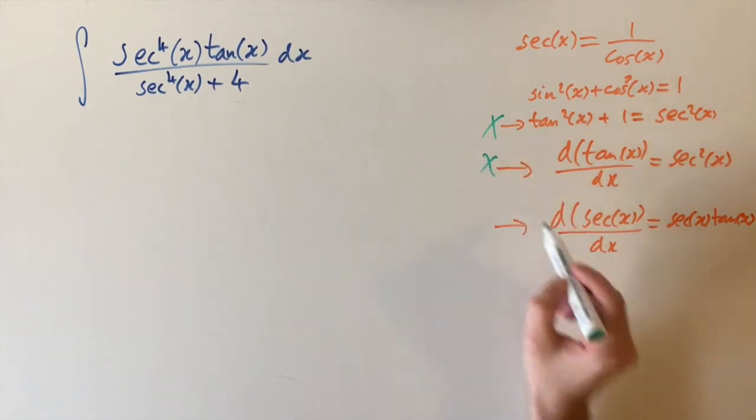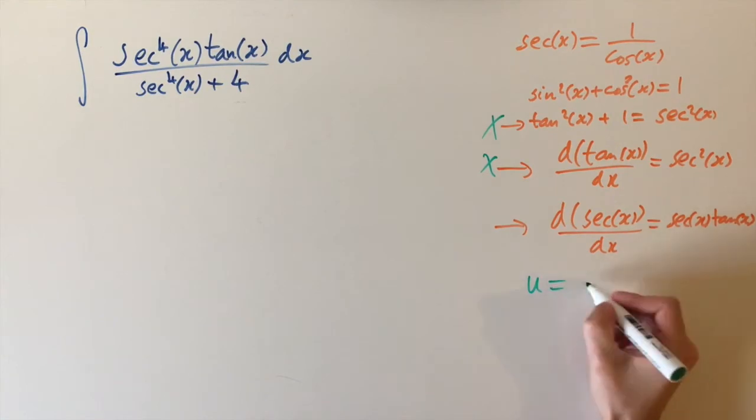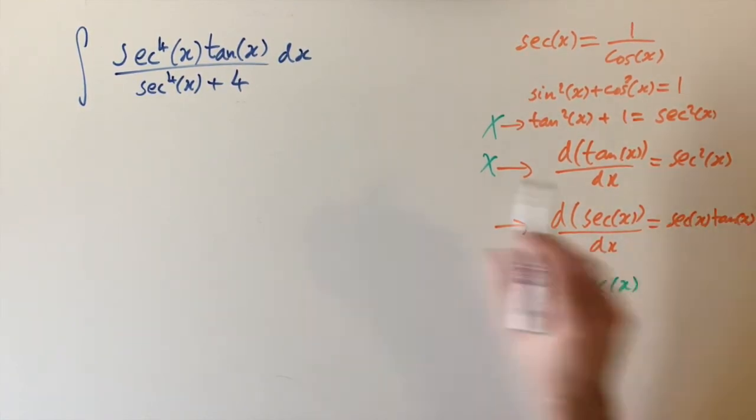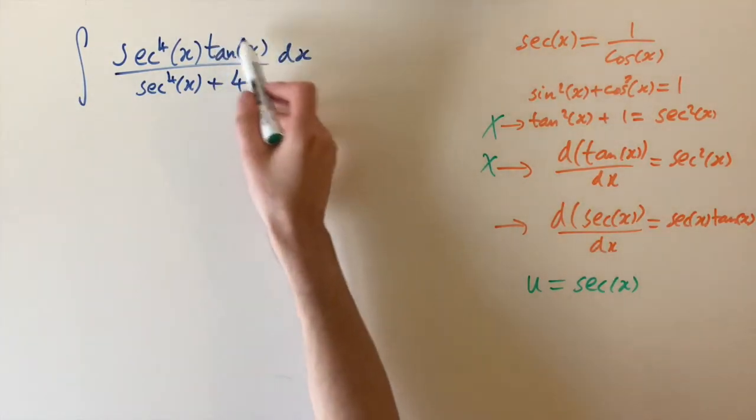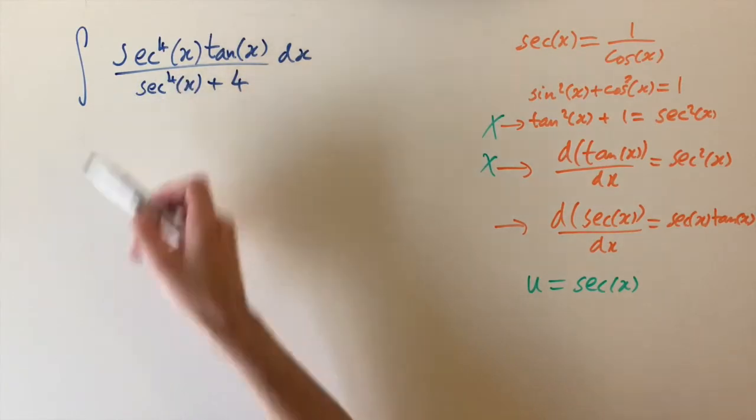So instead, if we look at this last relationship, if we use a substitution of u equals sec of x, then we have a derivative involving tan, which is going to get rid of the tan on the numerator. And then everything else we can express in terms of u very simply.